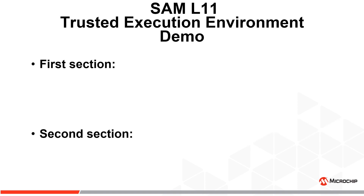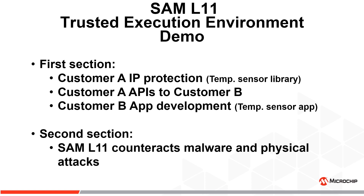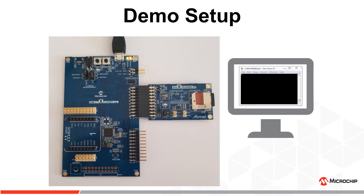The demo has two sections. The first section shows the protection of Customer A's IP, which is a temperature sensor library, while still allowing a second customer — referred to as Customer B — to use the library via predefined APIs provided by Customer A. Customer B uses these APIs to develop his temperature sensor application. The demo setup includes the SAM L11 Xplained Pro evaluation kit, IO1 Xplained Pro extension kit, and a computer.